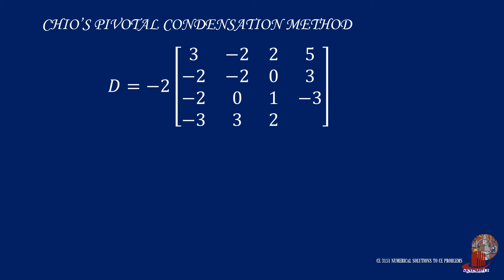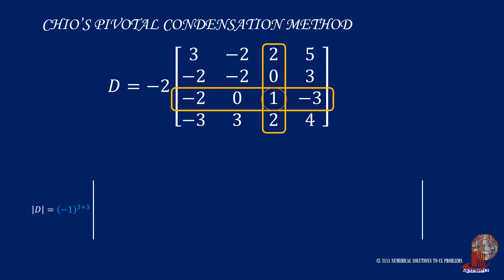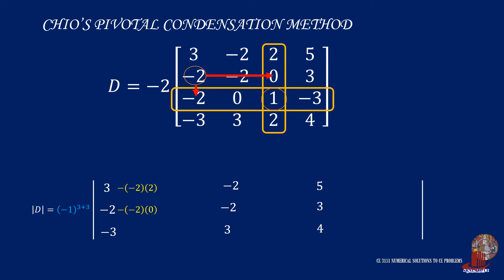So from the matrix, taking the pivot element A(3,3) as the intersection of its row and column, we can determine the reflected factors. Starting from A(1,1), which is 3, these can be subtracted by negative 2 times 2 — the vertical and horizontal reflected factors. Moving on to the next element in the column, we take negative 2 minus the reflected factors of negative 2 times 0.